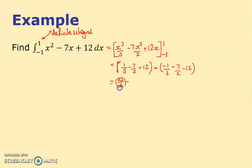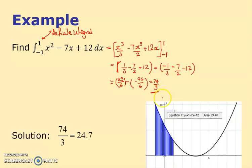Putting the second bracket in brackets to avoid mistakes: minus one-third minus seven-halves minus 12, which gives minus 95 over 6. So 53 over 6 minus (minus 95 over 6) — which I think gives 74 over 3. The calculator says 24.666... so that's 74 over 3, approximately 24.7.